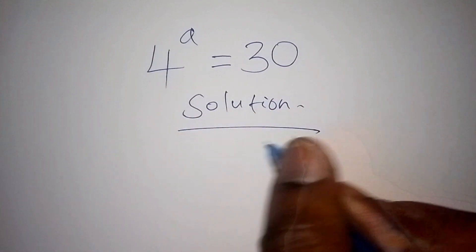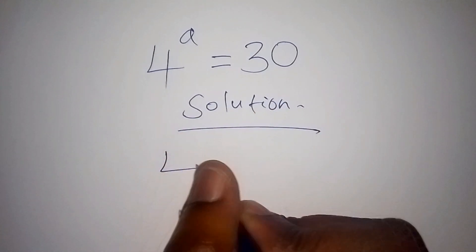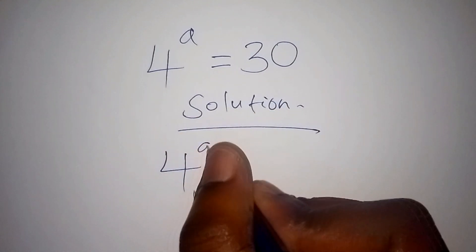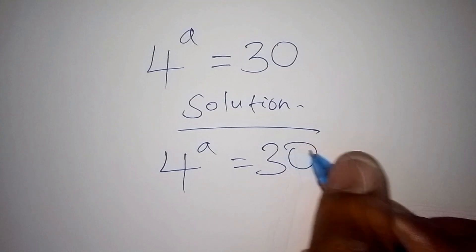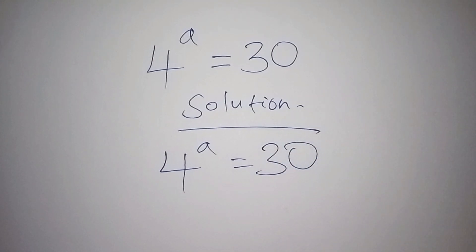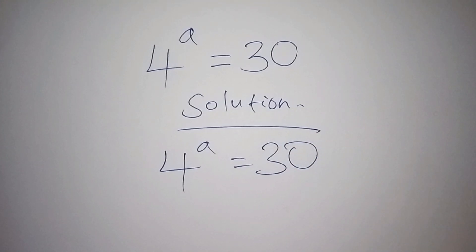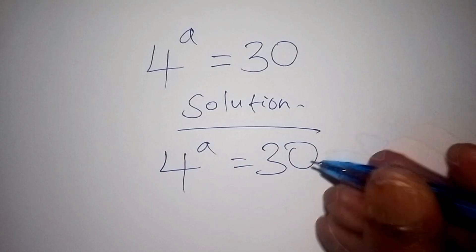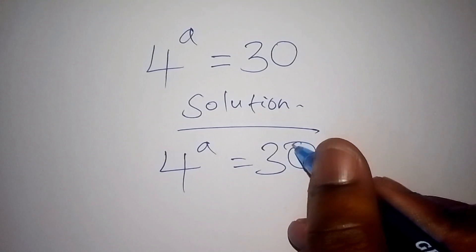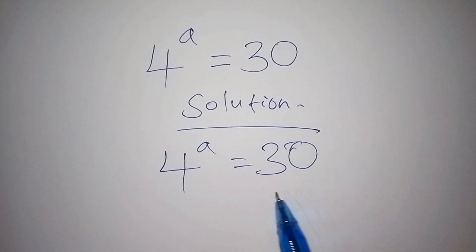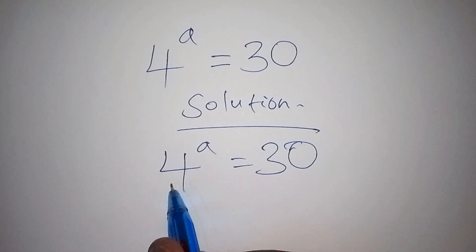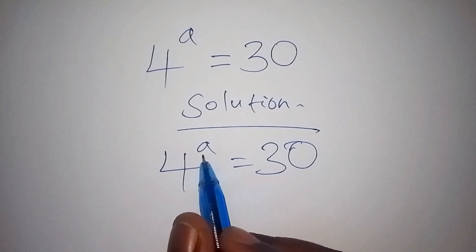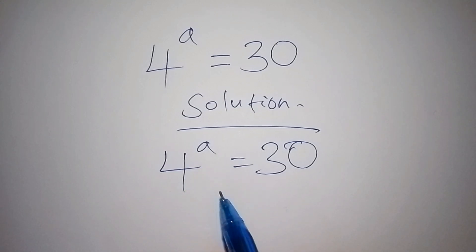We have 4 to the power of A equals 30. This 30 here is a whole number, and in 4 to the power of A, 4 is the base and A is the index.